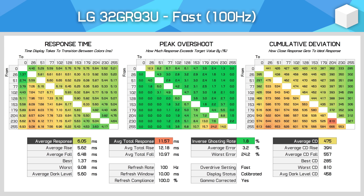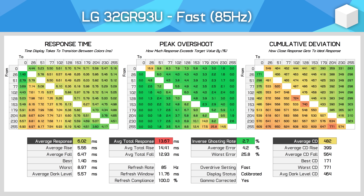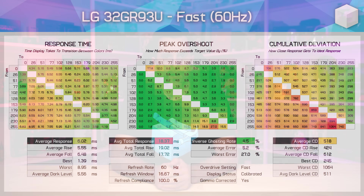Some monitors without G-Sync modules perform well enough that they don't really require Variable Overdrive and so don't implement it. The LG 32GR93U is one such example I tested in 2023. This is only a 144Hz monitor - the refresh rate range really isn't large enough to justify the use of Variable Overdrive with this panel, as performance can be very good without it.